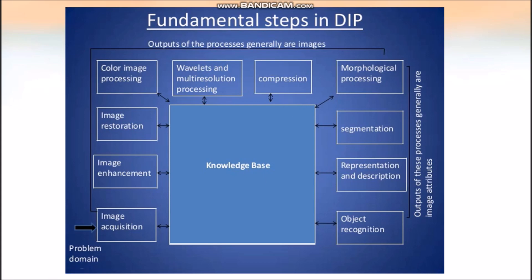Then comes compression. Compression uses many methods — one is based on wavelets, and there are many other methods as well. An example of compression is the JPEG file format. JPEG, which stands for Joint Photographic Experts Group, is a famous compression standard. Compression is mainly used for reducing the storage required to save an image, or to reduce the bandwidth required to transmit an image.